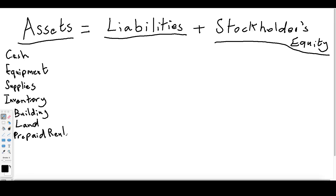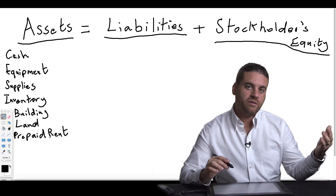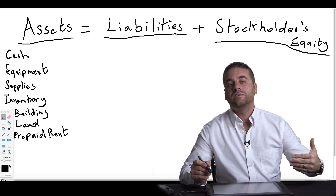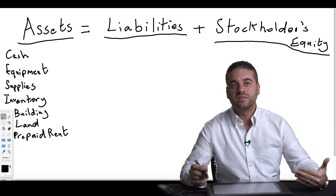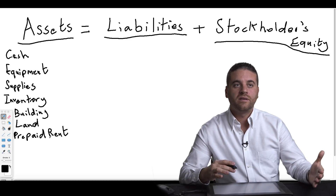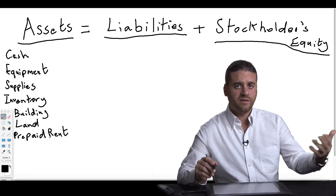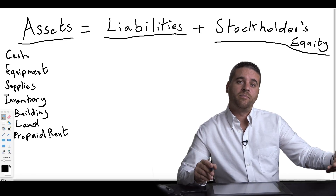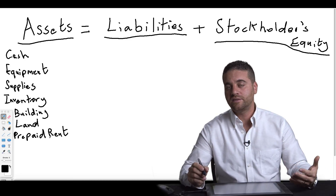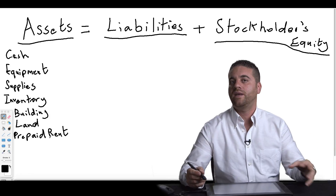We also consider prepaid accounts, such as prepaid rent or prepaid insurance. Prepaid rent is considered an asset because when you prepay the landlord for a property you're renting and haven't consumed that amount yet, it's like depositing cash — it still belongs to us. Once you start consuming that amount over time, it is no longer an asset.